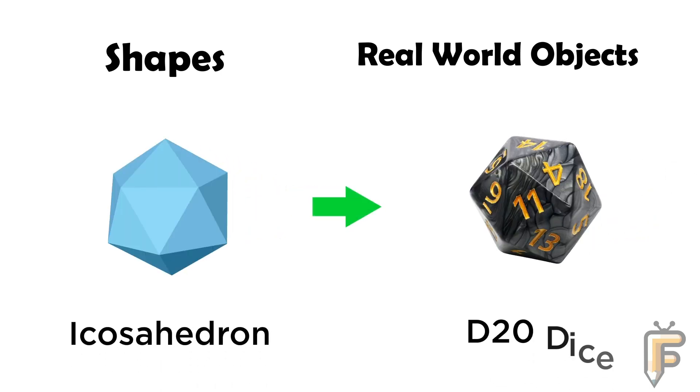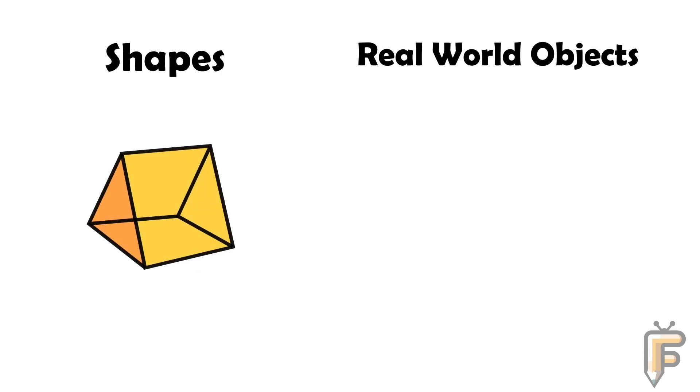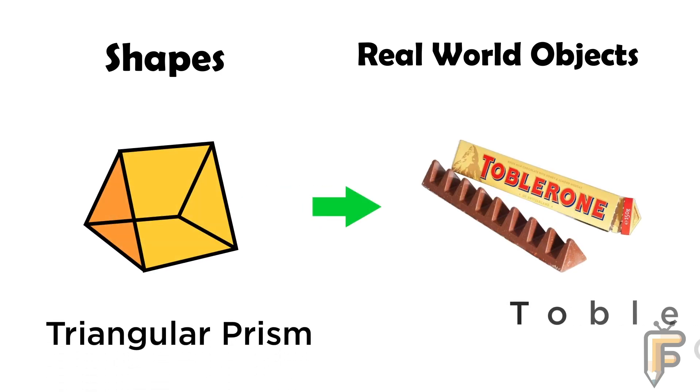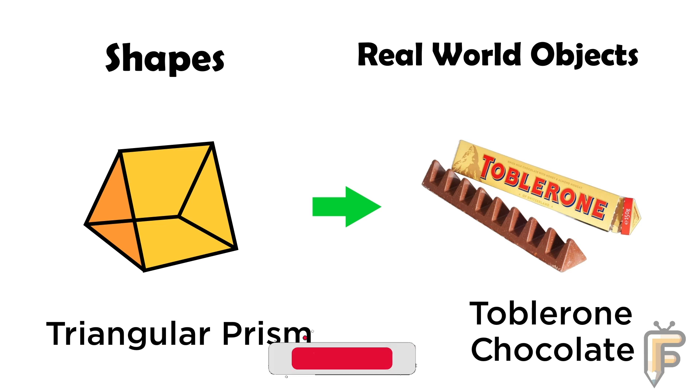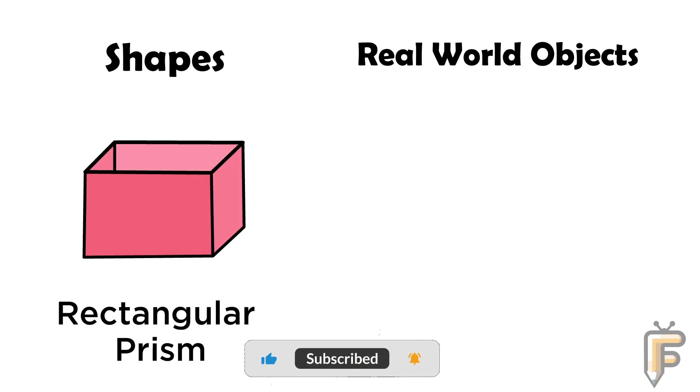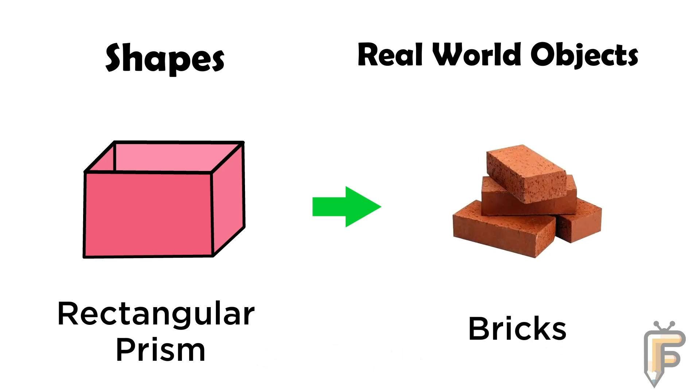Icosahedron: D20 dice is icosahedron shape. Triangular prism: Toblerone chocolate is triangular prism shape. Rectangular prism: bricks are rectangular prism shape.